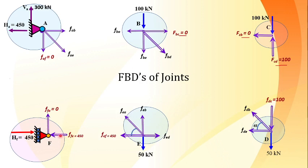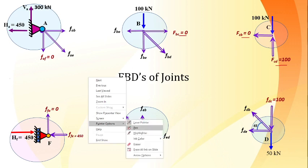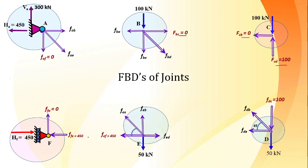From sigma Fy at joint A: 300 - FAE × sin45 = 0, giving FAE = 424.26 kN. Since the result is positive, the assumed direction is correct. Substituting FAE back into the sigma Fx equation: -450 + FAB + 424.26 × cos45 = 0, giving FAB = 150 kN. Both unknowns at joint A are now resolved.